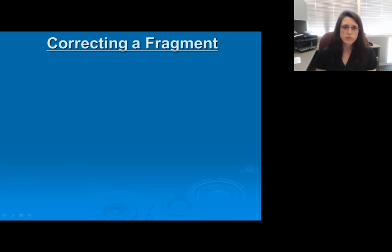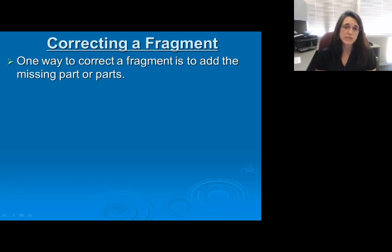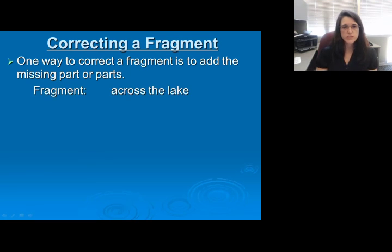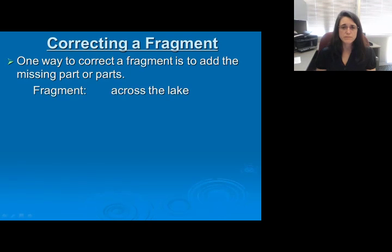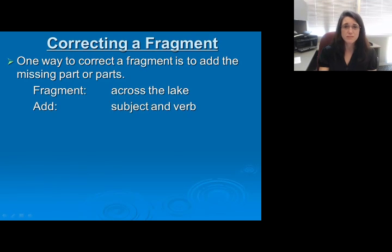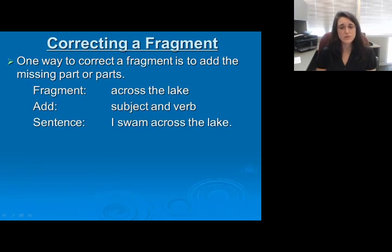Correcting a fragment is relatively easy — it boils down to filling in what's missing. Find the part that's missing and put it into the sentence. For instance, our phrase here is 'across the lake.' This is a prepositional phrase — do not be misled. It's missing both the subject and the verb. So what we're going to do is create a subject and a verb for this sentence: 'I swam across the lake.'